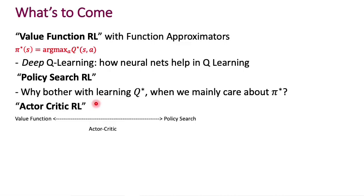There is then a third class of methods that tries to kind of bridge the gap between value function reinforcement learning and policy search reinforcement learning. This is called actor critic RL. The idea there is to take policy search methods and use value functions to help them along to help them learn faster. So these are actor critic reinforcement learning approaches where the actor is a policy and the critic will be a value function.